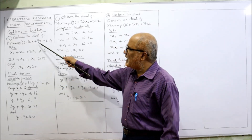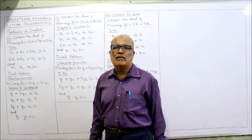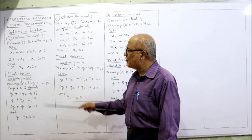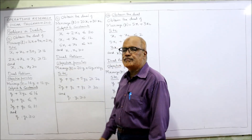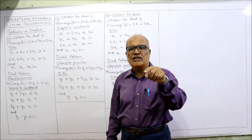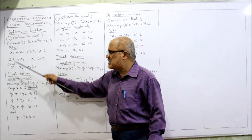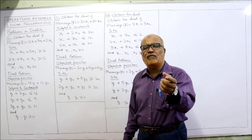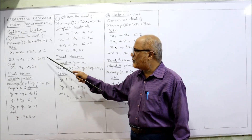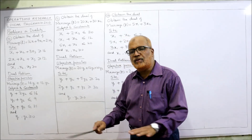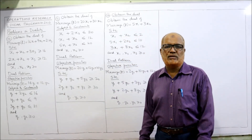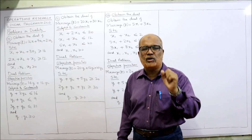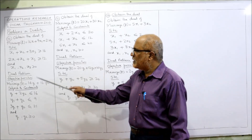Since X1, X2, X3 are already variables in the primal, we use new symbols Y1 and Y2 for the dual. So the dual objective function is: Maximize Z = 16Y1 + 12Y2. Rule one: convert minimization to maximization. Rule two: the coefficients of the dual objective function are the restrictions of the primal constraints.